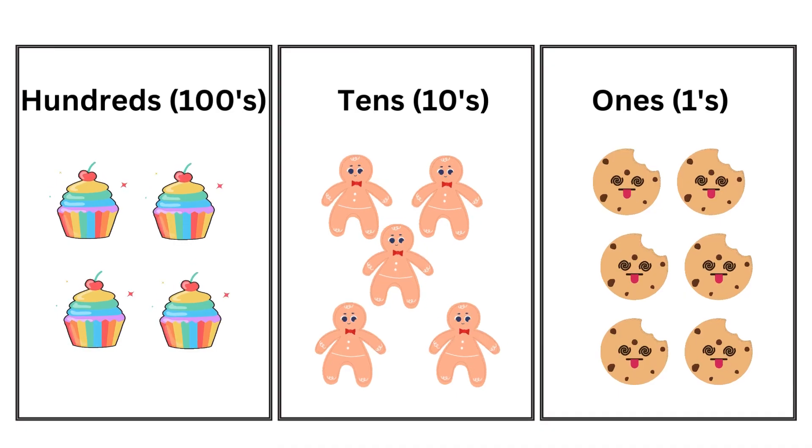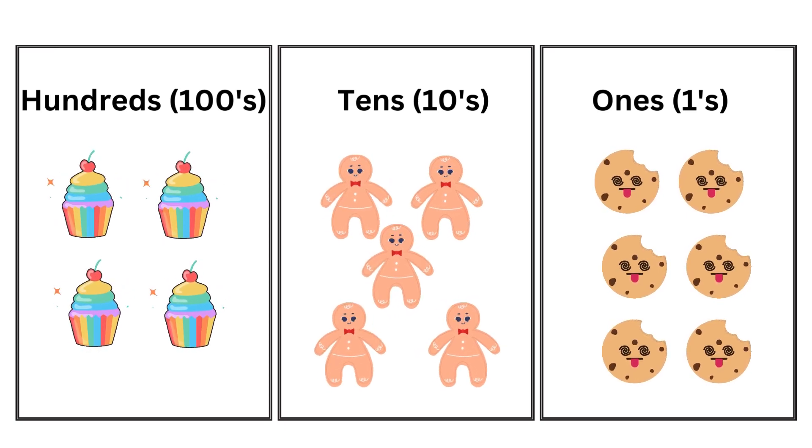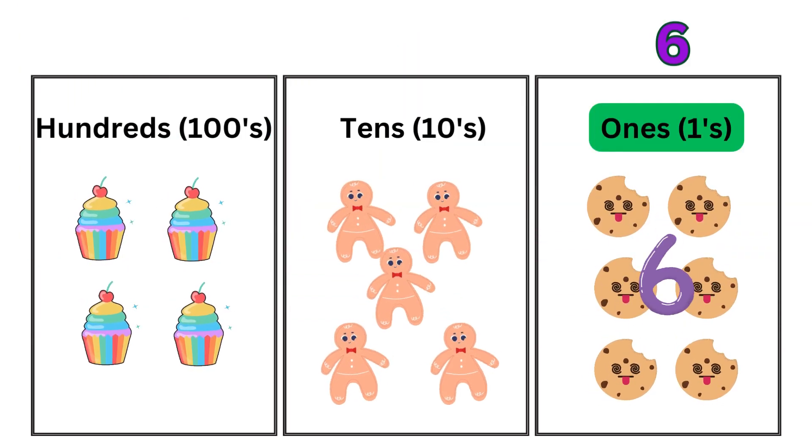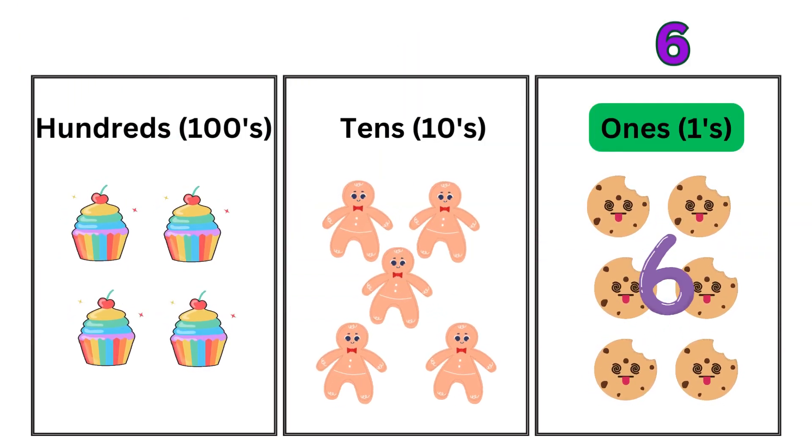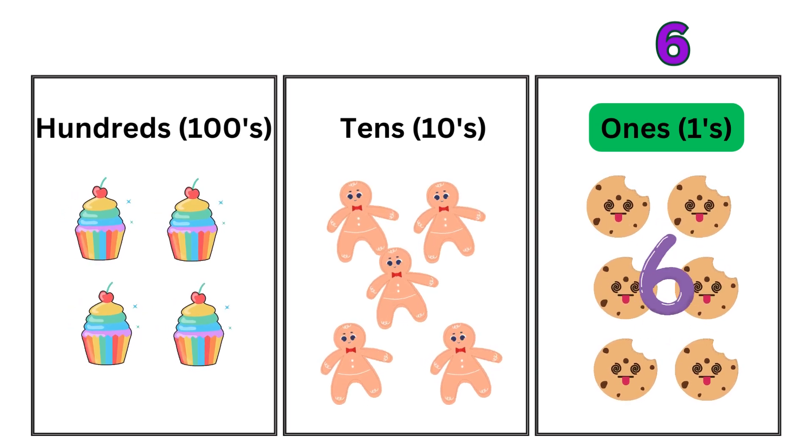Hey kids, can we play a game? Let's count the number of cookies here. Find the place the digit sits and make up a number. Let's start with the rightmost position, the 1s place. In the 1s place we have 6 cookies, so it means 6 ones, so it's the digit 6.